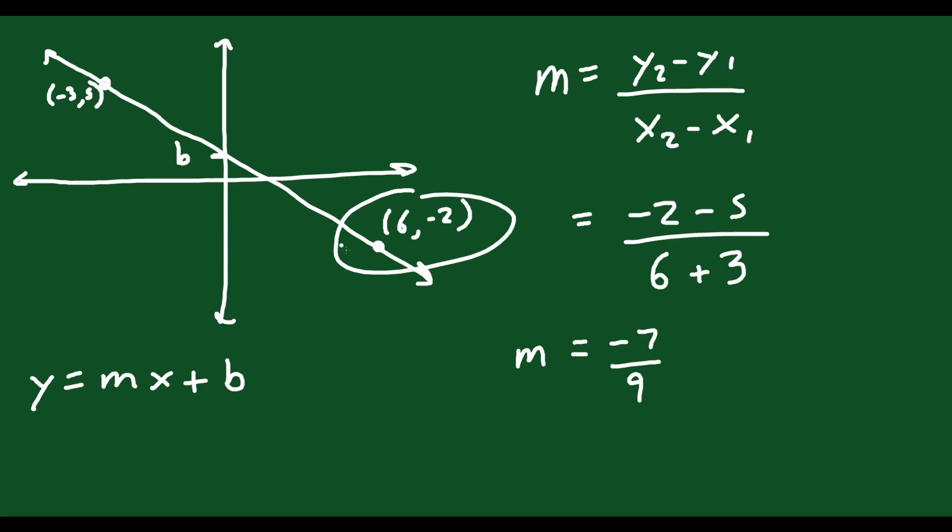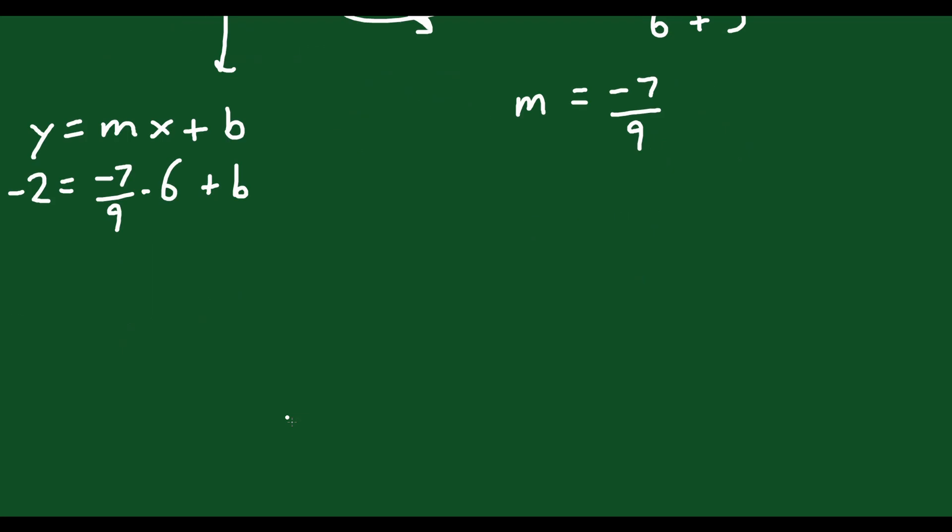So let's do that. Let's say I want to plug in this point here. So 6, negative 2. So negative 2 is my y value. My m is negative 7 over 9. I know that. And the x is 6. So now I have all these numbers. I have b. All I have to do is solve for b. So negative 2 is equal to negative 7 times 6 over 9. If you want, that will simplify to negative 14 over 3. Because 6 over 9 is 2 thirds. And so 2 times 7 is 14, and that'll be 14 over 3. So you can do that however you want. And then you can move this number to the other side. So you'll have negative 2 plus 14 over 3 is equal to b.